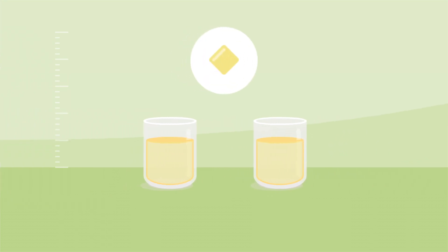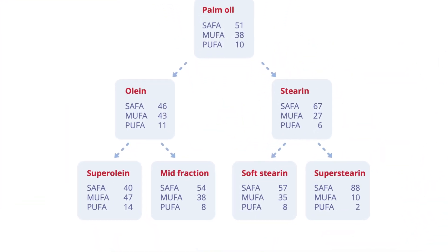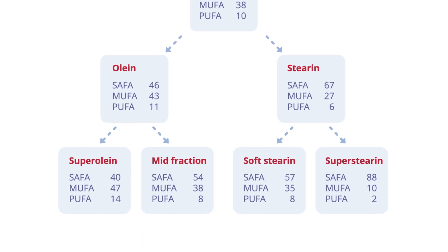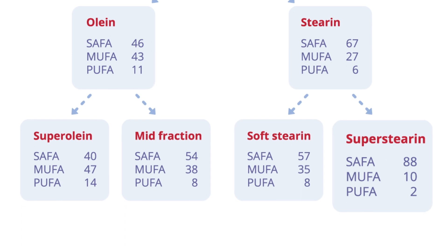The stearin fraction is separated into soft stearin with a melting point of around 48 degrees Celsius and superstearin with a melting point of around 60 degrees Celsius. The different fractions have different levels of saturation, that is why the melting points are different. Superolein is the least saturated, superstearin the most.